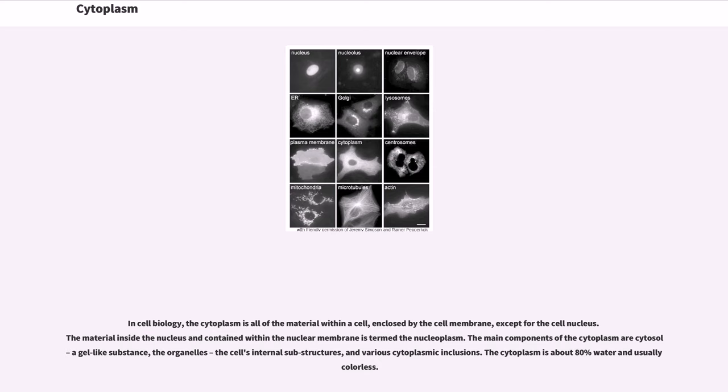The material inside the nucleus and contained within the nuclear membrane is termed the nucleoplasm. The main components of the cytoplasm are cytosol, a gel-like substance, the organelles, the cell's internal substructures, and various cytoplasmic inclusions.